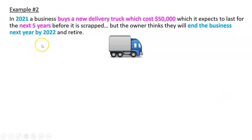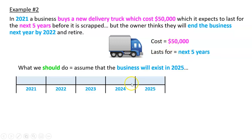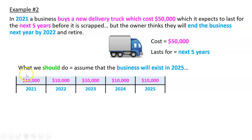Example number two. In 2021, a business buys a new delivery truck which costs $50,000. It expects it to last for the next five years before it's scrapped, but the owner thinks they will end the business by the end of 2022 and retire. This is a topic called depreciation, which we'll keep simple here. We're going to say this truck costs $50,000 and it's going to last for five years. We bought it in 2021, so we should assume the business will exist for the next five years and we will use up $10,000 of the truck every year.